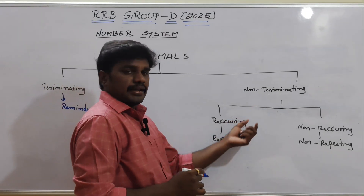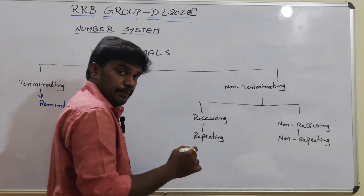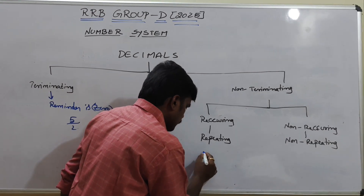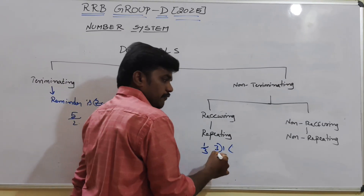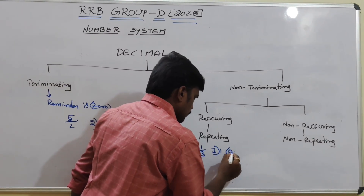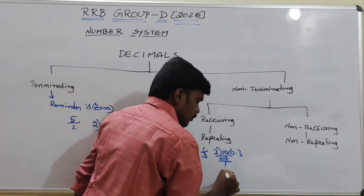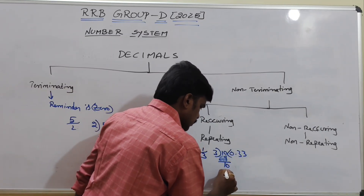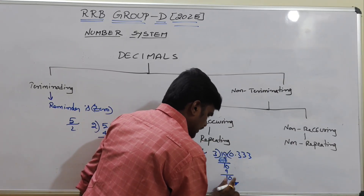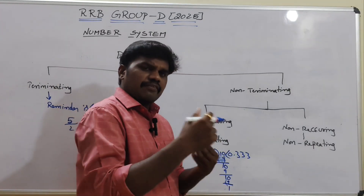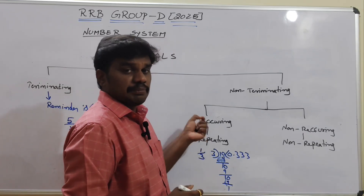Non-terminating decimals have two types: recurring and non-recurring. Recurring means repeating numbers. For example, 1 by 3 — when you divide, 3 goes into 1 zero times, so 0 point something; 3 times 3 is 9, remainder 1; again 3 times 3 is 9, remainder 1 — it continuously repeats. These are called recurring or repeating numbers.